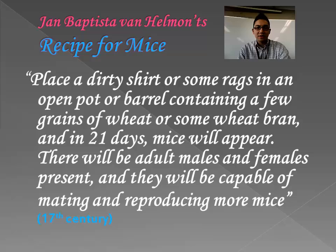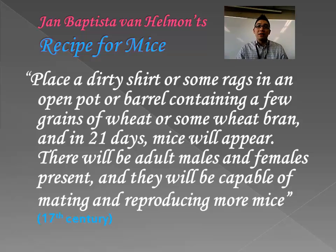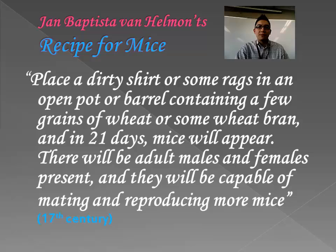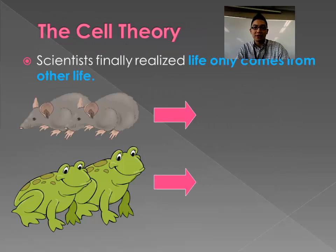From a science textbook of the 17th century, there's actually a recipe for how to produce mice: place a dirty shirt or some rags in an open pot or barrel containing a few grains of wheat or some wheat bran, and in 21 days mice will appear — adult males and females present, capable of mating and reproducing more mice. The thing is, if you repeated this experiment you would probably actually seem to get mice, so by repeating it and getting the same results you'd start to really think this process works.